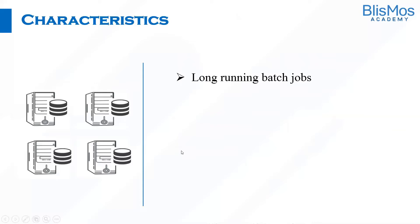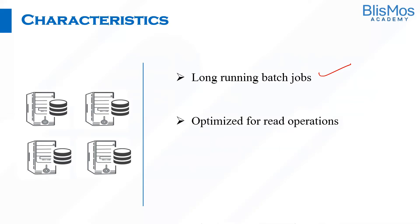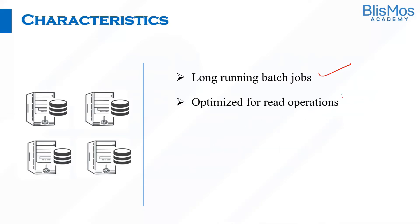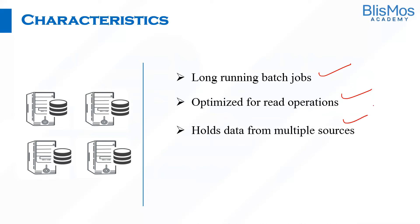What are the characteristics of a data warehouse? In a data warehouse, we usually have long-running batch jobs because we are not looking at only one or two records — we're looking at potentially millions of records. It is optimized for read operations. Usually in a data warehouse, we wouldn't be updating on a continuous basis the way we do in a RDBMS. It holds data from multiple sources.